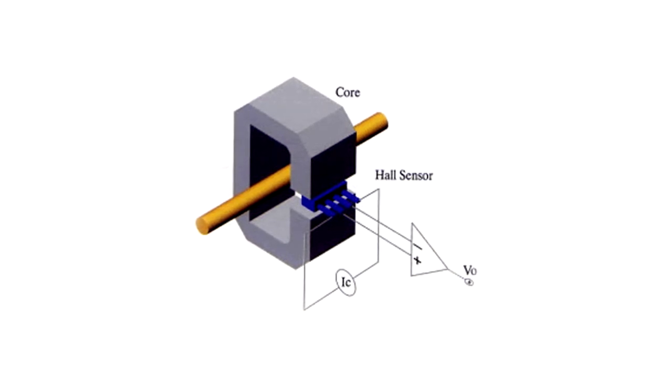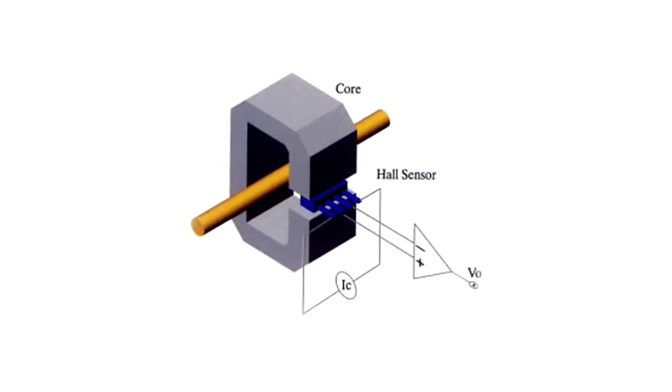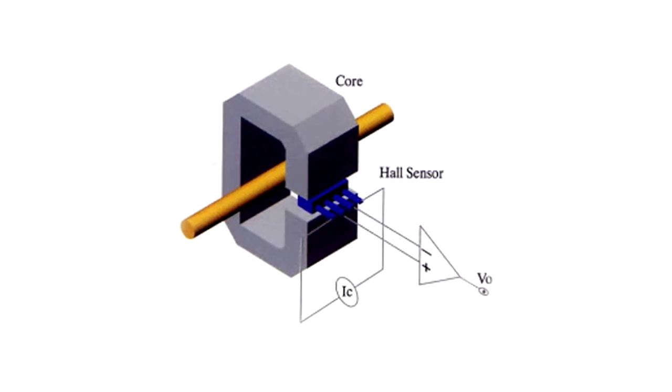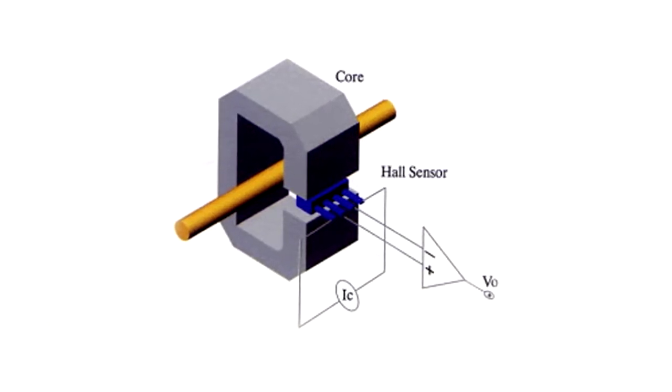To be able to measure DC, inside the jaws there is a sensor located in a small air gap of the core that is used to measure the Hall effect.